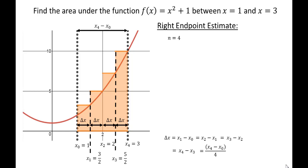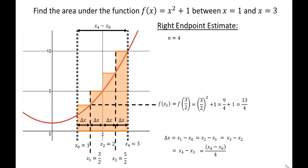The width of each rectangle stays the same because that's how we divided it, but the height of each rectangle is going to be different. Let's look at f of x sub one: that gives us the height of the first rectangle. Since we're using right endpoints, we use x sub one, which is the x value on the right edge. So f of x sub one is f of 3 halves, which is 3 halves squared plus 1, equal to 9 fourths plus 1, which equals 13 fourths. Now we have the width and height of our first rectangle.